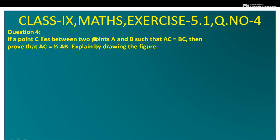Hello everyone, today we will solve question number 4, exercise 5.1 of class 9. Question number 4 is: if a point C lies between two points A and B such that AC is equal to BC, then prove that AC is equal to half of AB. Explain by drawing the figure. We have to solve this question.